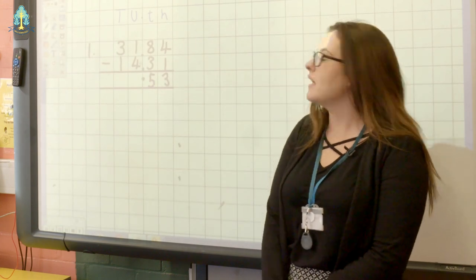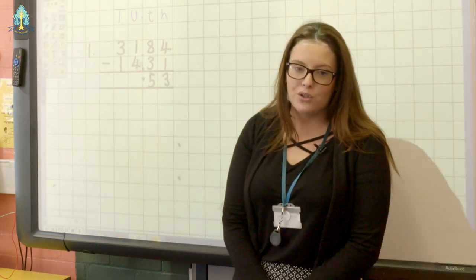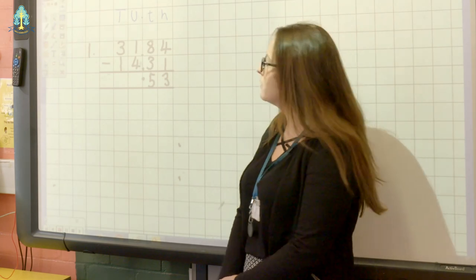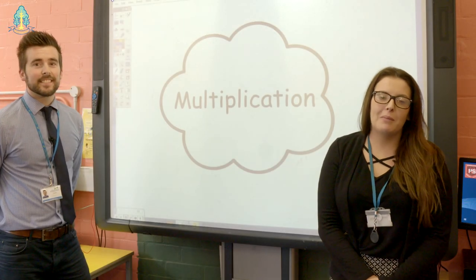It's important with subtraction that we always encourage children to subtract from top to bottom. The reason for this is apparent in this example: one subtract four — we cannot do that. Therefore we have to exchange from our tens column. We can exchange one ten for ten units, so we cross out our three and make it a two, and we put our ten units that we have exchanged here, making it eleven. Eleven subtract four is seven, and two subtract one gives us an answer of one. Our final answer is seventeen point five three.